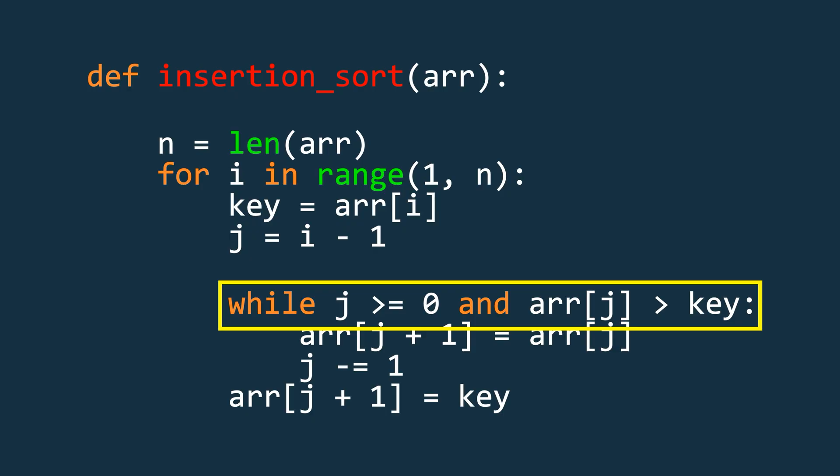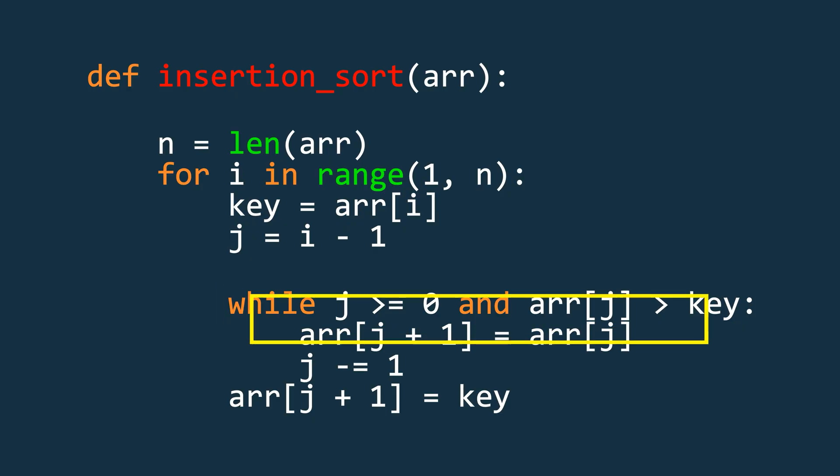To do this, use a while loop that runs as long as j is not negative and the element at index j is greater than the key element. Inside the while loop, shift the element at index j to the right by assigning the element at index j plus 1 to be the element at index j. Then decrement j by 1.